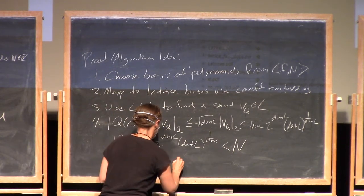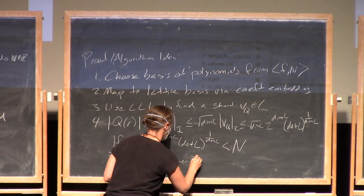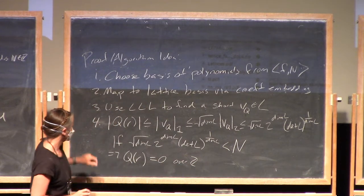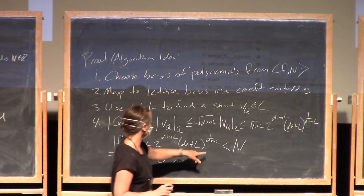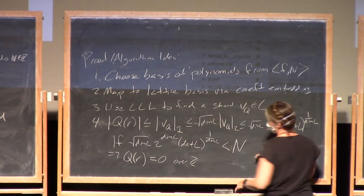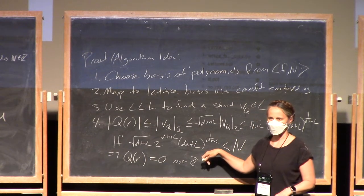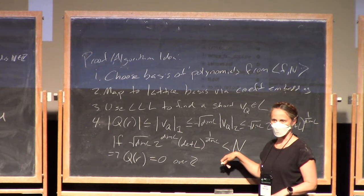So that means that in order to check whether this works the only thing that we need to verify is whether the determinant, the dimension of the lattice actually satisfy this bound that we're looking for.